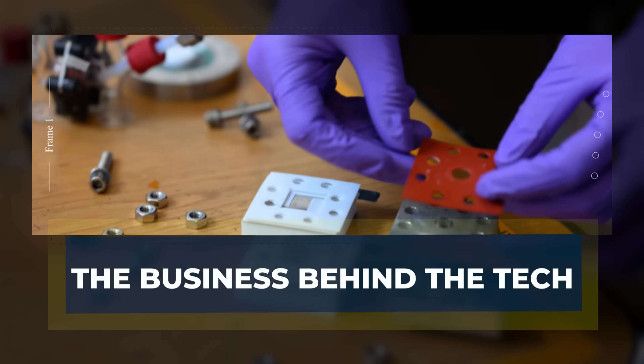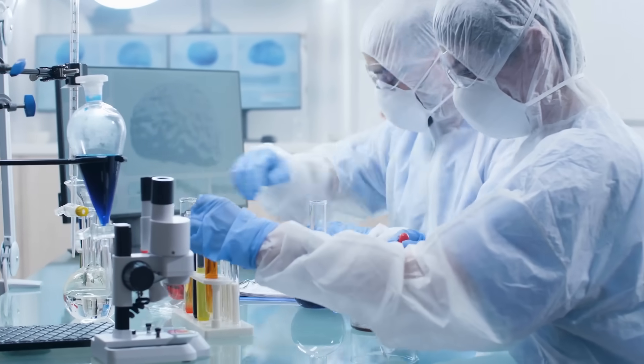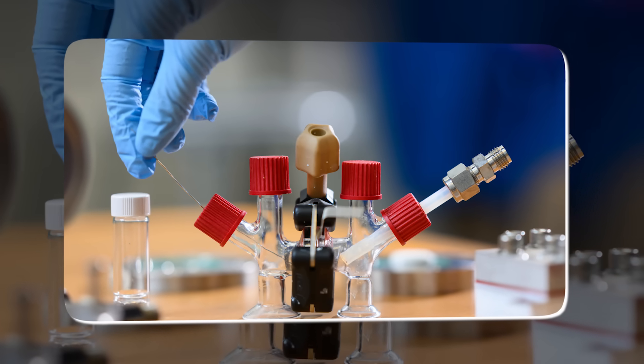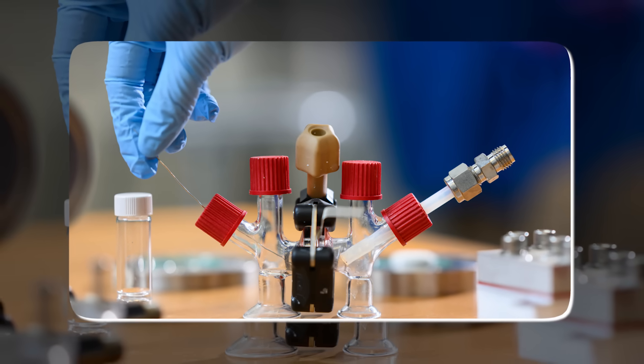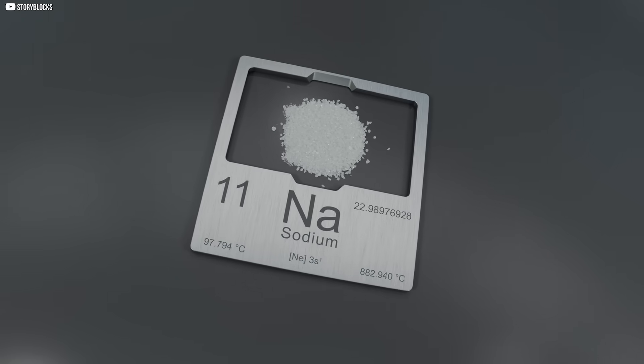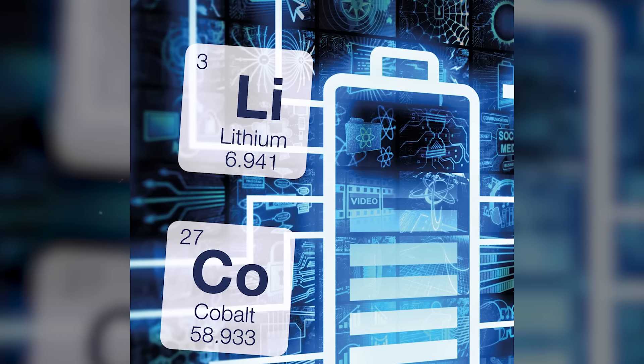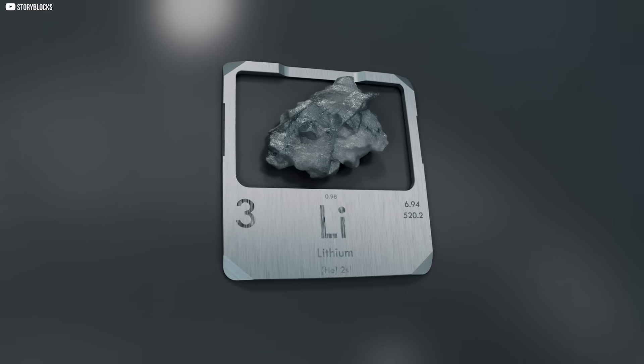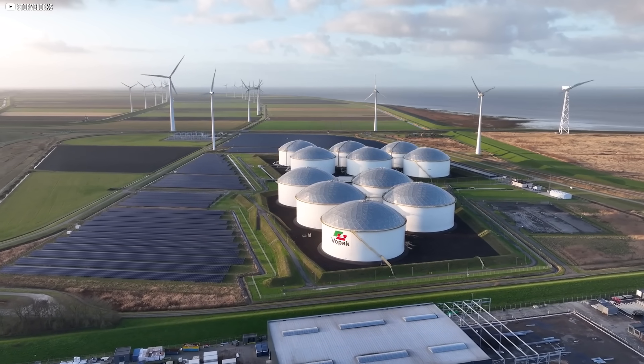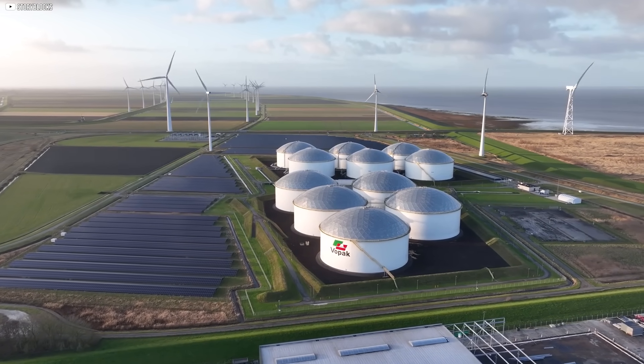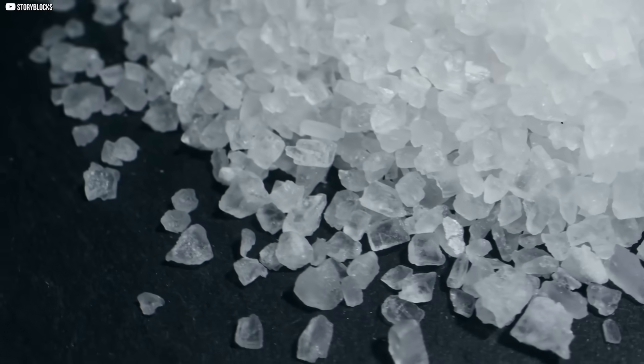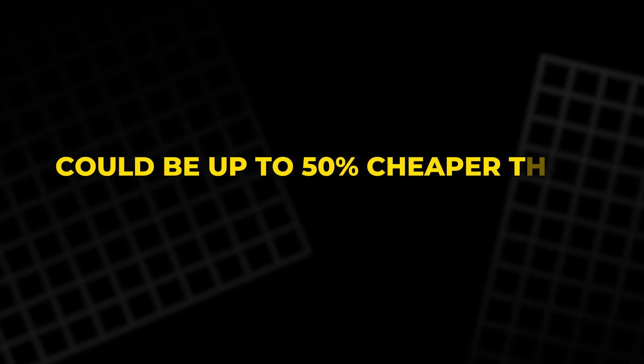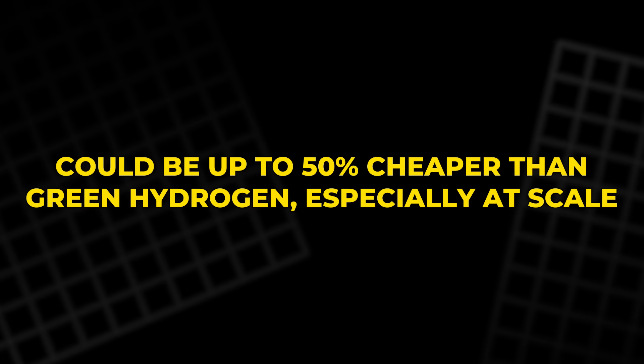Beyond the lab, technology lives or dies by its economics. And this is where MIT's sodium fuel cell shows real promise. Sodium is cheap, abundant, and globally available. Unlike lithium or cobalt, which are concentrated in a few countries and face growing supply chain pressures. Compared to green hydrogen, which is still expensive to produce and transport, sodium could cut costs dramatically. The researchers estimate that sodium-based fuel could be up to 50% cheaper than green hydrogen, especially at scale.